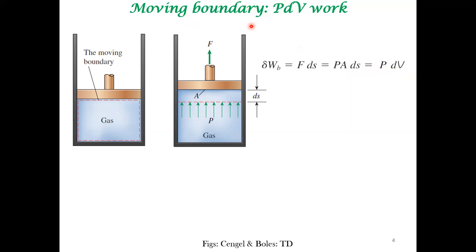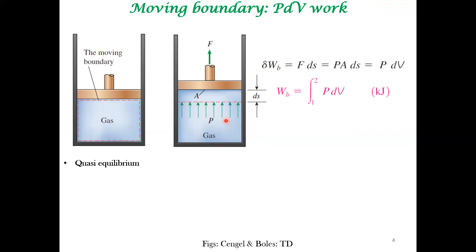The motion of the piston is central to the analysis. When volume changes from state one to state two, we integrate the boundary work accordingly. In a quasi-equilibrium state, all thermodynamic variables — pressure and temperature — are uniform throughout the cylinder. If the piston moves very quickly, there is no uniformity in pressure, giving rise to convective flow of gases within the compartment. That is not quasi-equilibrium and not what we analyze in thermodynamics.